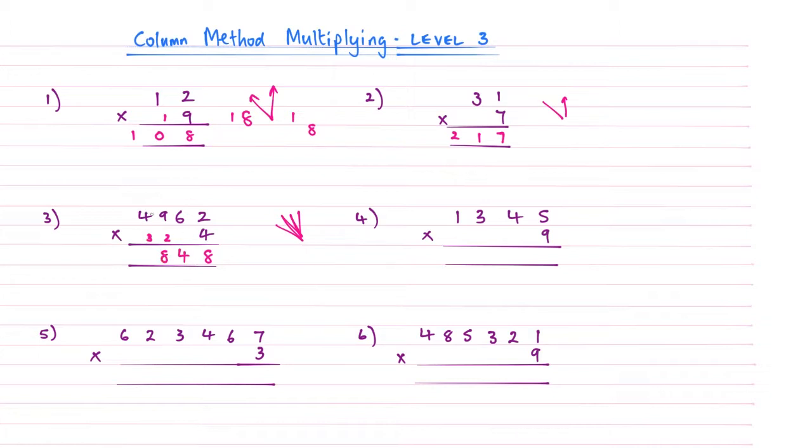Then we need to carry the 3 again into that column. You really do need to have your wits about you on this. The last one is 4 times 4 is 16. Add that 3, and then that becomes a 19. Now, if you're not properly concentrating on these, it's so easy to make a mistake. My advice would be just to be steady away and don't try and rush through these. That's the answer to question number 3.